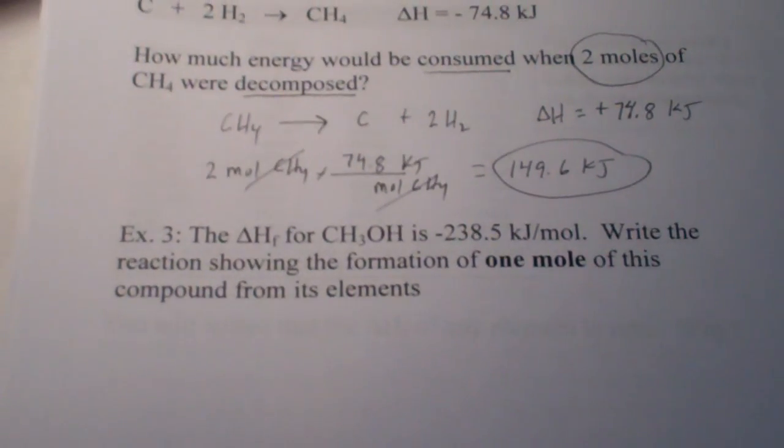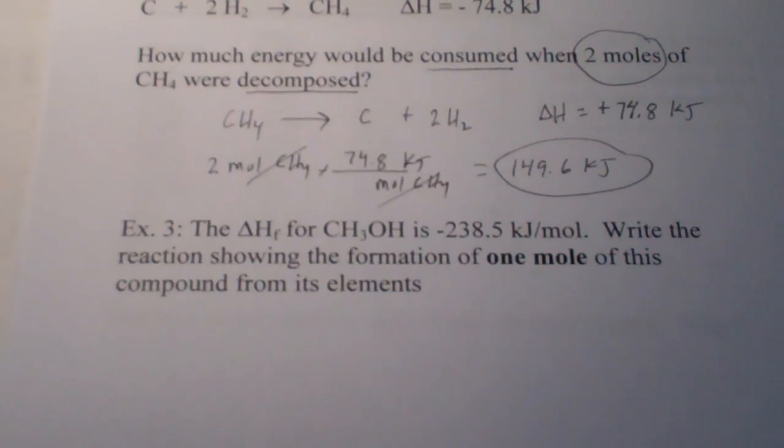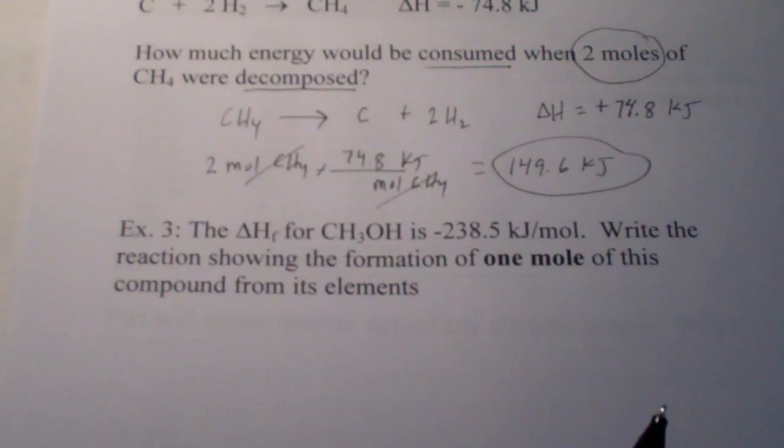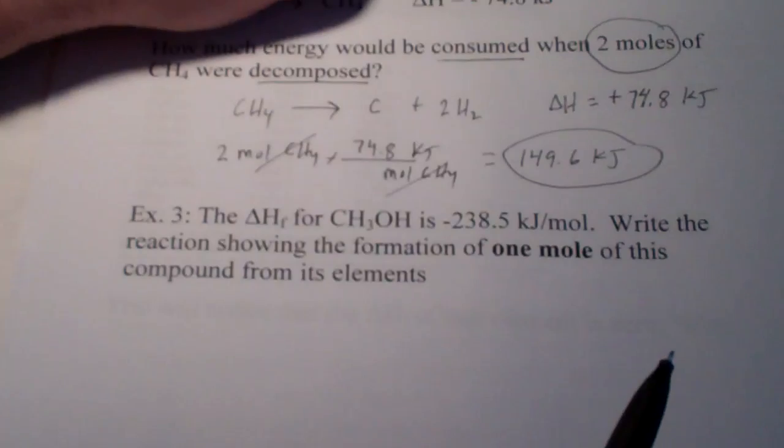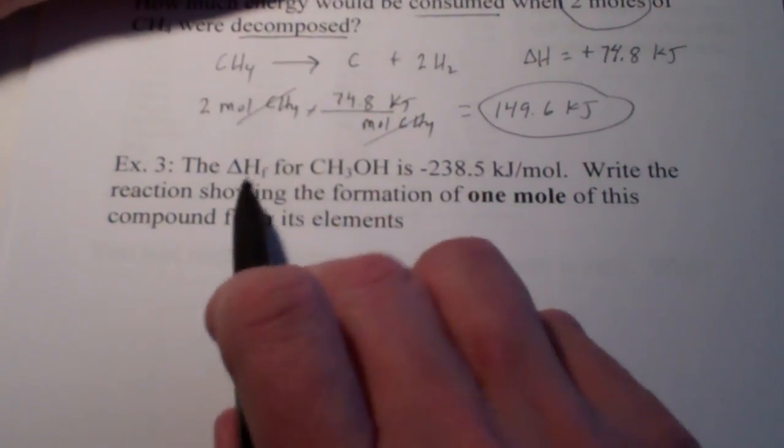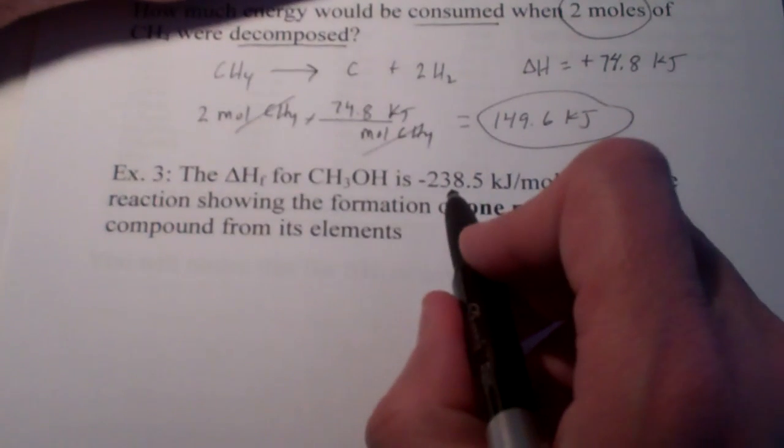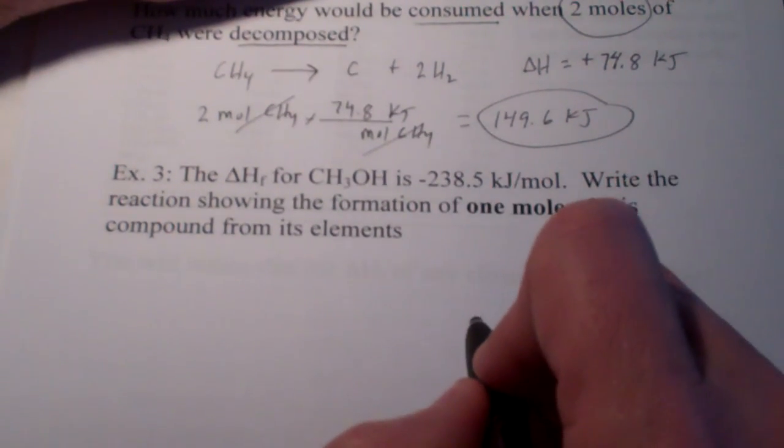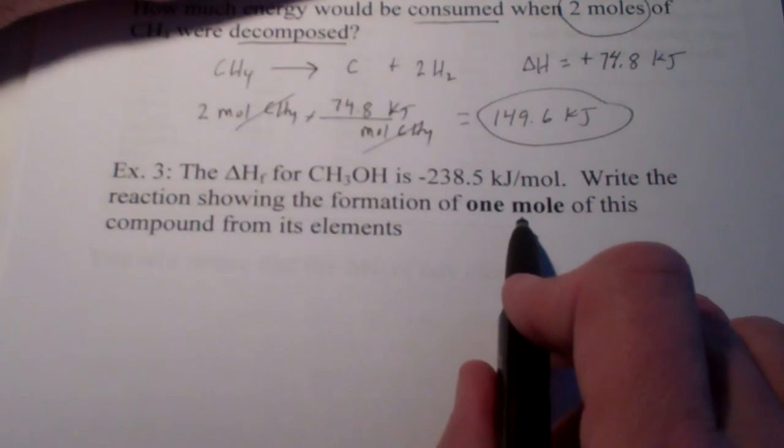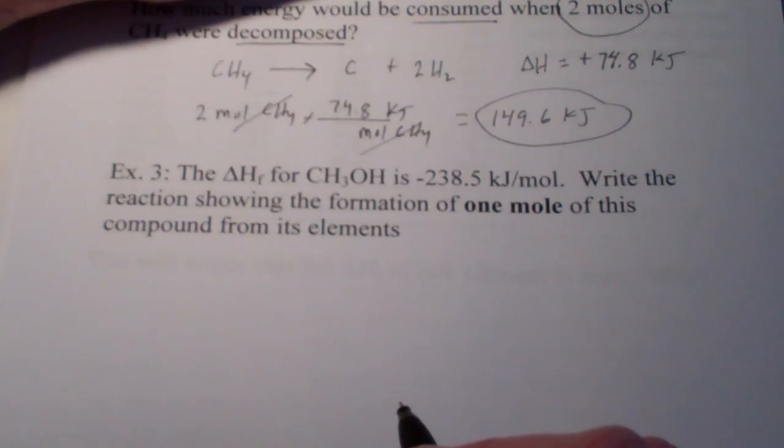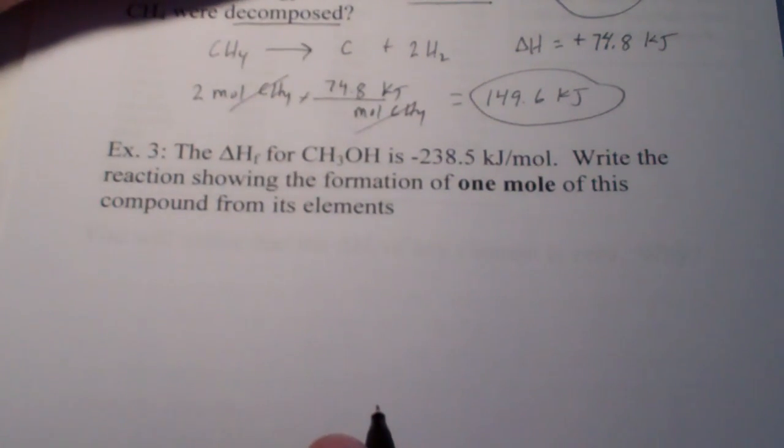Now, why don't you try one? Let's read this question. And then, on your own, you're going to pause this. And, you're going to see if you can do it without my help. Then, when you're finished, go ahead and unpause it and see how I did it and see how well you did. The heat of formation of methanol, CH3OH, is negative 238.5 kilojoules per mole. Let's write a reaction showing the formation of one mole of this compound from its elements. So, take a minute, pause this, and see if you can do it without my help.